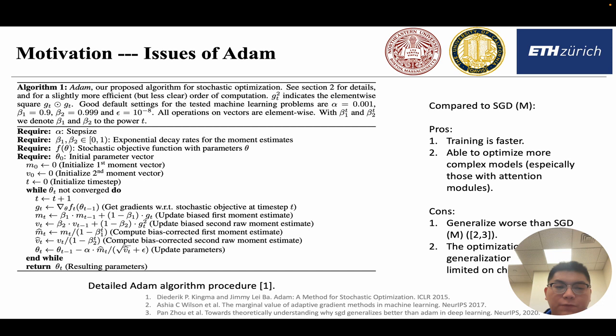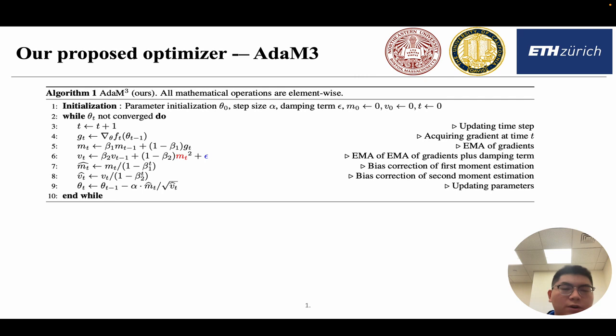Secondly, the optimization and the generalization ability of AdamW is still very limited on some challenging tasks, including image generation or natural language modeling. To solve the above issues, we propose a novel optimizer, which we name AdaM3. Algorithm 1 summarizes the procedure of AdaM3 algorithm proposed by us.